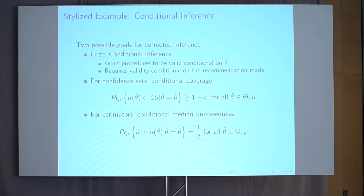The first is what we call conditional inference. For conditional inference, I want my inference procedures to be valid conditional on the treatment theta-hat — conditional on the policy I'm recommending. For confidence sets, this means conditional coverage: the probability that the true effectiveness of my recommended treatment lies in my confidence set, conditional on the recommendation made, should be 95% or whatever level we choose. Likewise for estimators, we think about conditional median unbiasedness: the probability that I overestimate the effectiveness of the recommended treatment, conditional on the recommendation made, should be one-half.